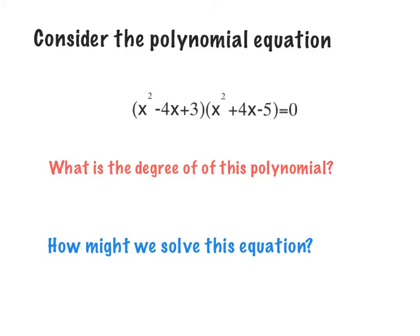Example one: consider the polynomial equation (x² - 4x + 3)(x² + 4x - 5) = 0. Two things to take away: it's an equation because of the equals zero, and you'll notice there are two terms here. What is the degree of this polynomial? If I were to multiply this all out using the distributive property or tabular method, my largest power would be x to the fourth — so this is a fourth degree polynomial.